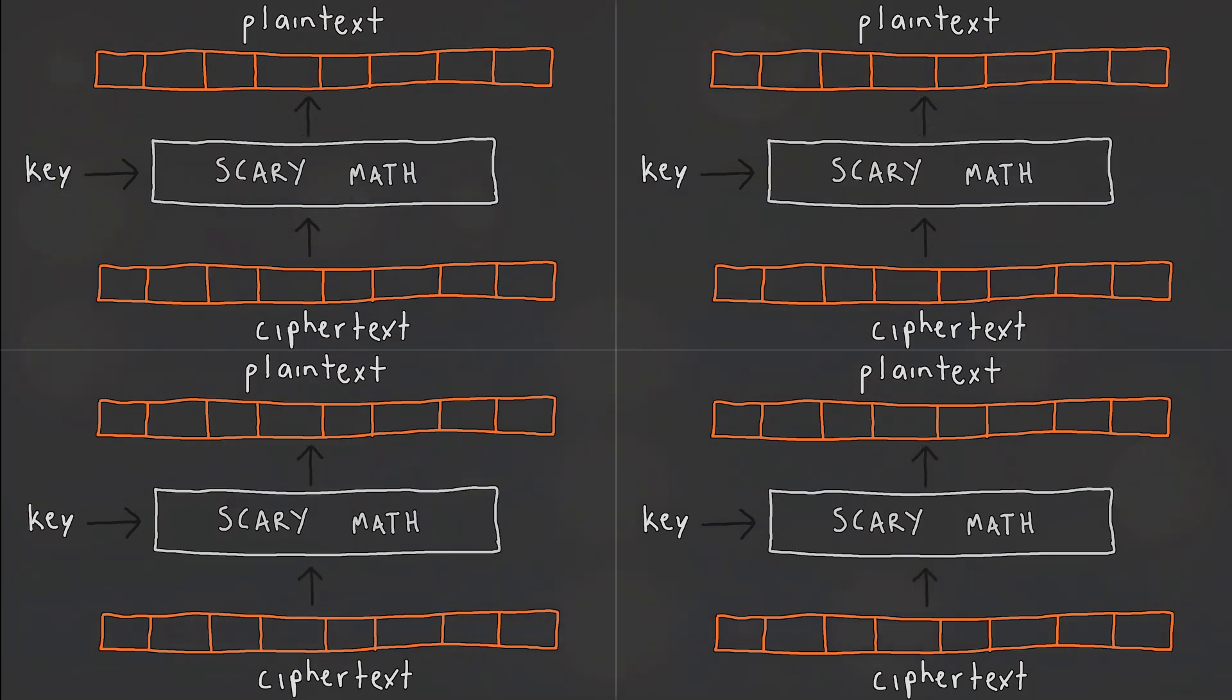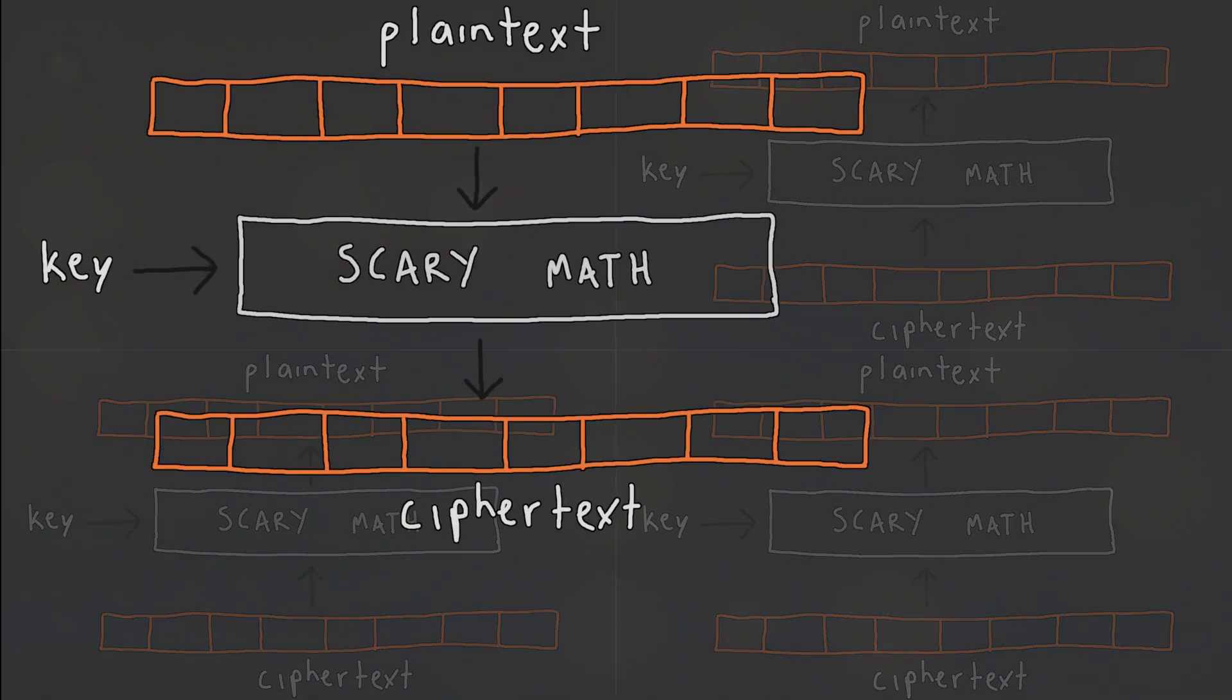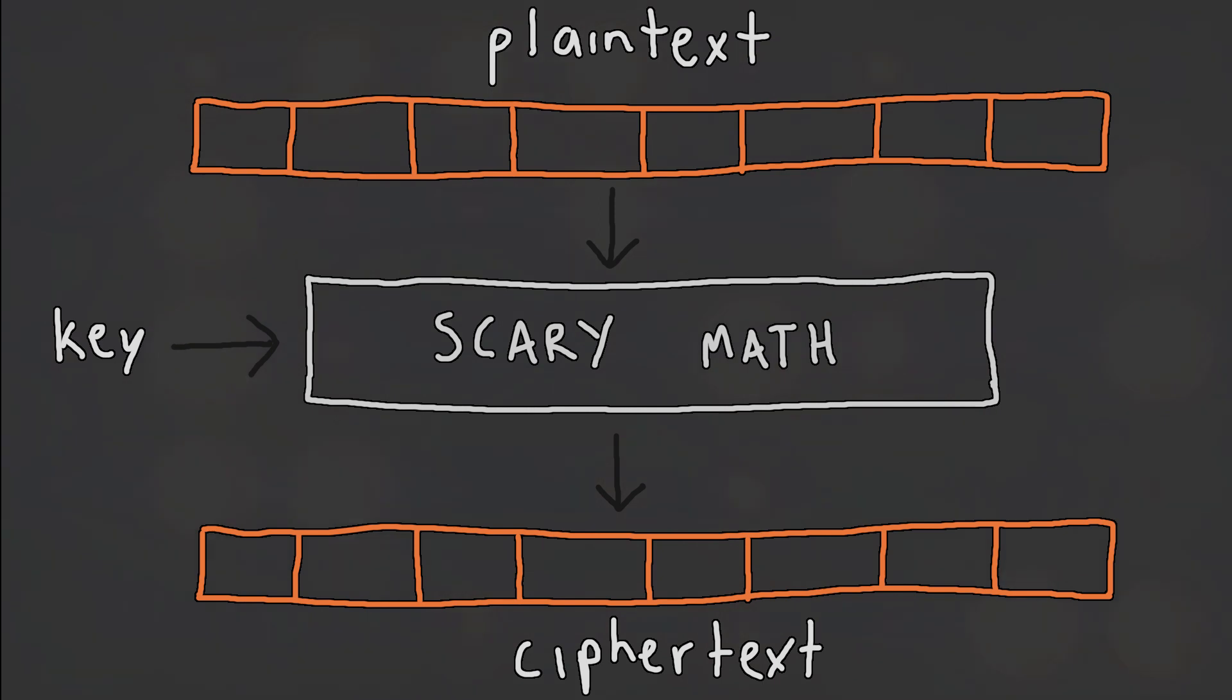Decryption operates in the exact same way, except the input is the encrypted ciphertext, and not the plaintext. That's it. In its most simple form, that's how a symmetric block cipher works. There's nothing more to it. The dream. You know how to use encryption, and you didn't have to touch any math.